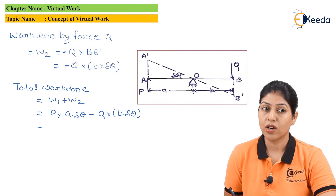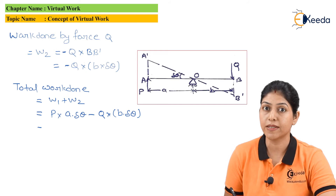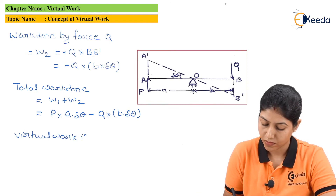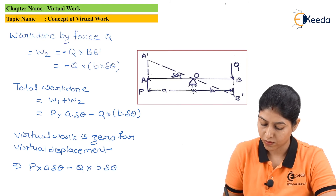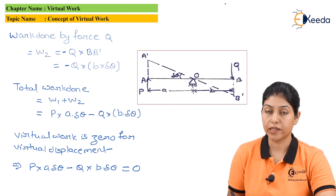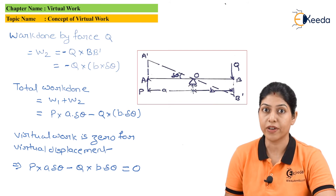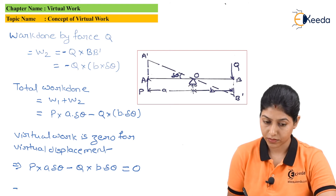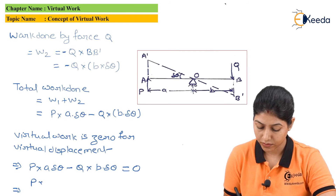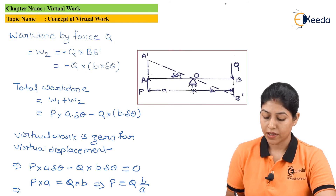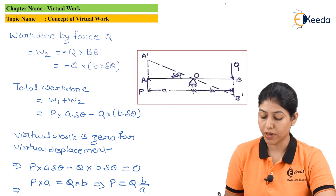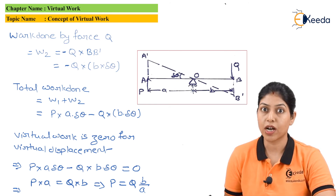As per the concept of virtual work, the virtual work for every imaginary displacement is zero. The total work done is considered as the virtual work, so the virtual work will be zero. Our equation becomes: P × a × delta-theta minus Q × b × delta-theta = 0. Since virtual work for every virtual displacement is zero, we can find out the relation between P and Q: P × a = Q × b, so P = Qb/a or Q = Pa/b.